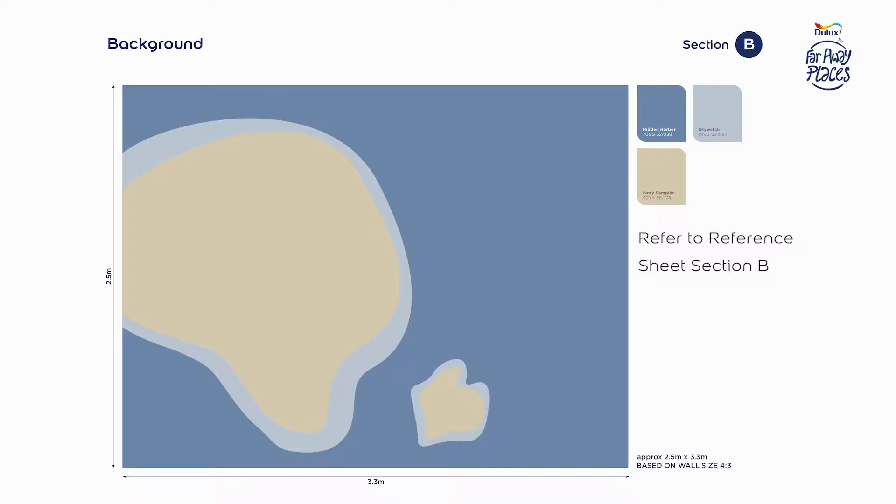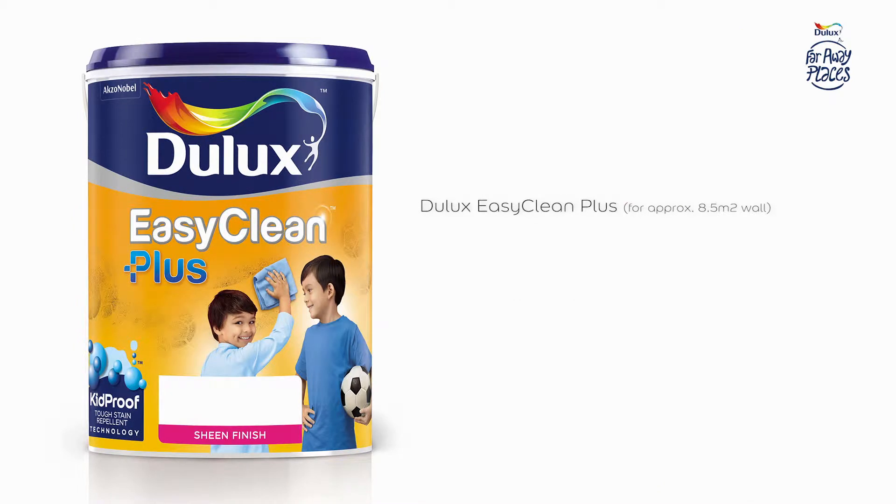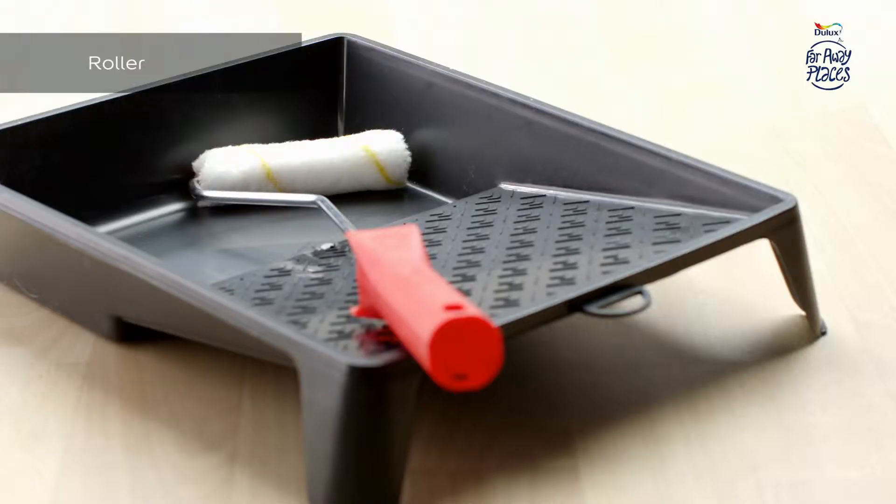Step 1: Creating the background wall. As per the colors in section B in the reference sheet, you will need 2.0L Hidden Harbor, 1.0L Skywatch, 1.0L Ivory Sampler of Dulux EasyClean Plus, a roller, and a brush.